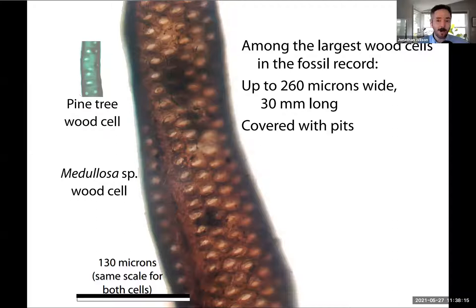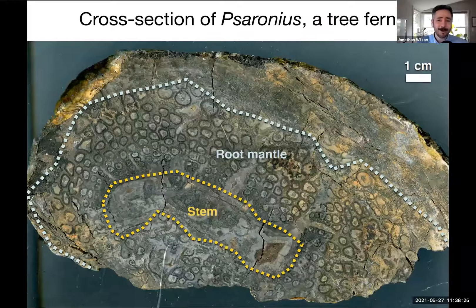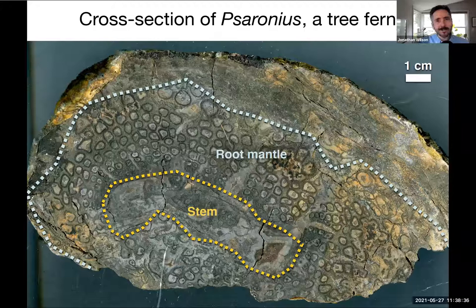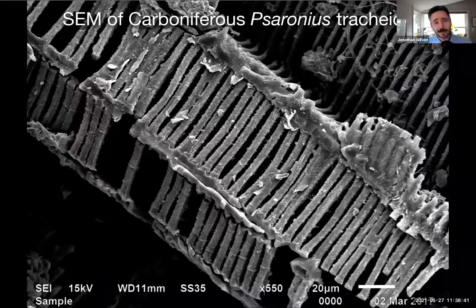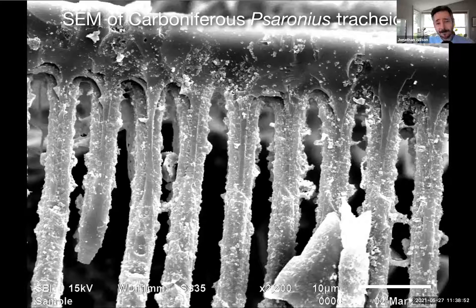On the other end of the physiological spectrum, this is a cross-section of Saronius, our tree fern — a key plant in the time period we're discussing. Looking down on this plant from cobalite material, most of the cross-sectional area is actually root mantle. Through work with students, we've been macerating cobalite material to understand the tissues better. An SEM of tracheids macerated from Saronius shows extraordinary preservation — we can actually see parts of the pit membrane still attached to the scleriform bars of these tracheids, more than 300 million years later.